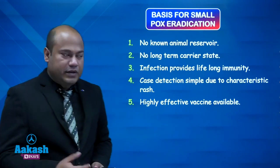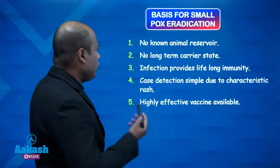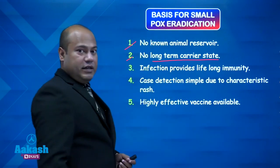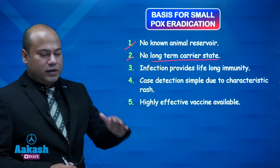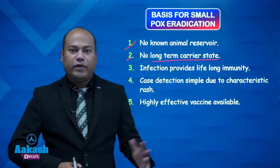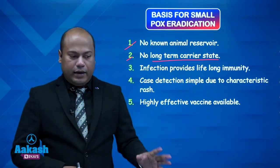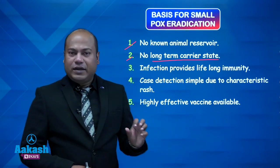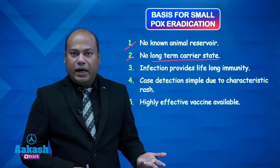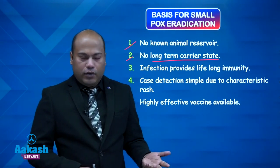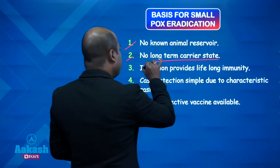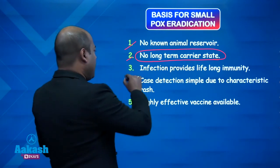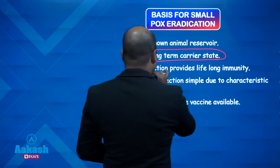Now, what is the basis for smallpox eradication? Number one: there is no known animal reservoir. Number two: no long-term carrier state. A case means someone harboring the bacteria or virus and showing symptoms; a carrier harbors it without showing symptoms. If no carrier state exists, eradication becomes much easier. Smallpox infection also provides lifelong immunity.